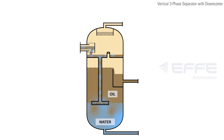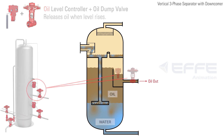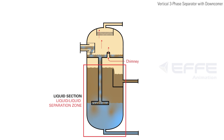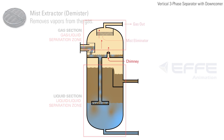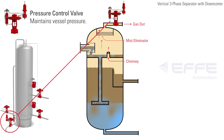The interface level controller will open the water dump valve when the interface level rises. The lighter oil will separate out and rest on top of the water. The oil level in the vessel is determined by the weir height; oil flows over the weir and into the oil bucket. This oil level in the bucket is then controlled by a level controller which opens the oil dump valve when the level increases. A chimney equalizes gas pressure between the lower liquid separation zone and the upper gas section. The gas exits through a mist extractor to a back pressure control valve, which maintains constant vessel pressure.